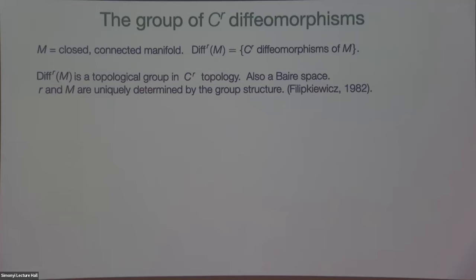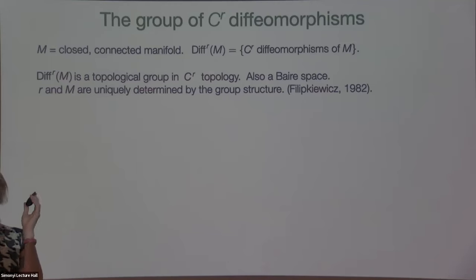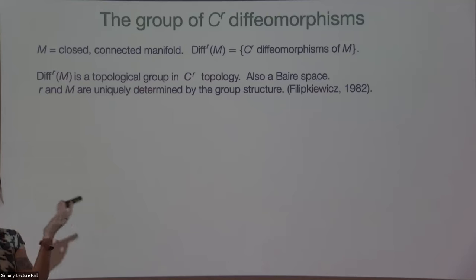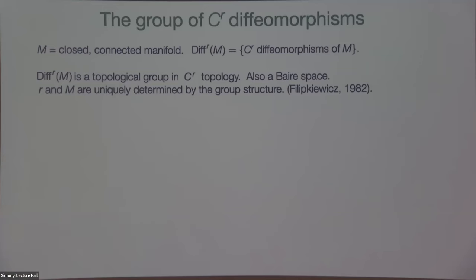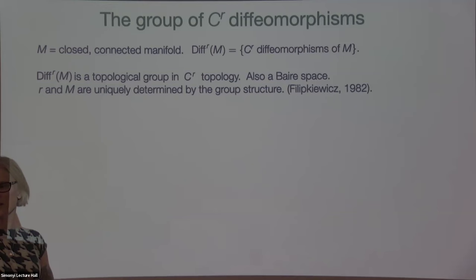A dense G-delta is a countable intersection of open and dense sets. A residual set is a set that contains a countable intersection of open and dense sets — so it's a very large set from a topological point of view. An interesting fact: it's a theorem of Filipkiewicz from 1982 that states this group of diffeomorphisms is completely determined by its algebraic structure in the sense that if I have two groups of C^K and C^L diffeomorphisms of manifolds M and N, and I have an algebraic isomorphism between those groups, then M and N are diffeomorphic, K and L are the same, and that diffeomorphism induces that automorphism of groups.